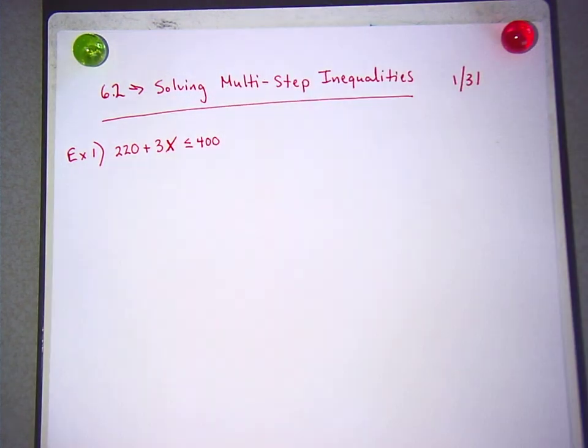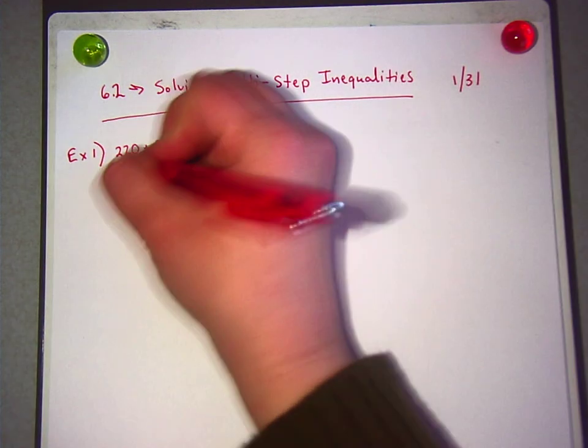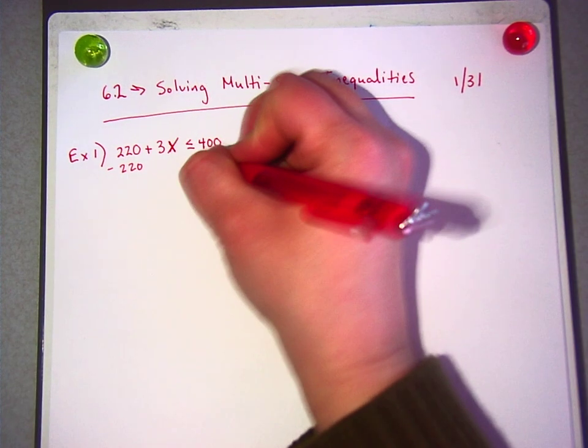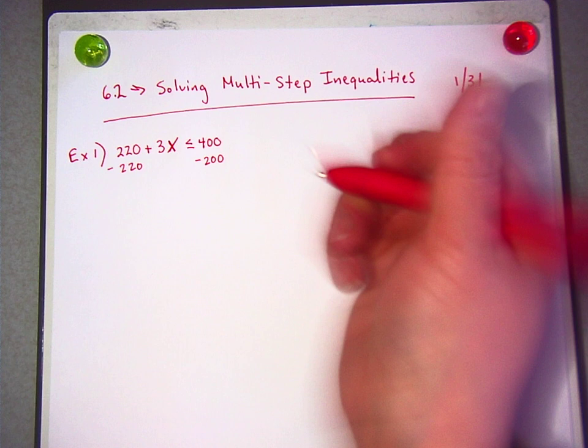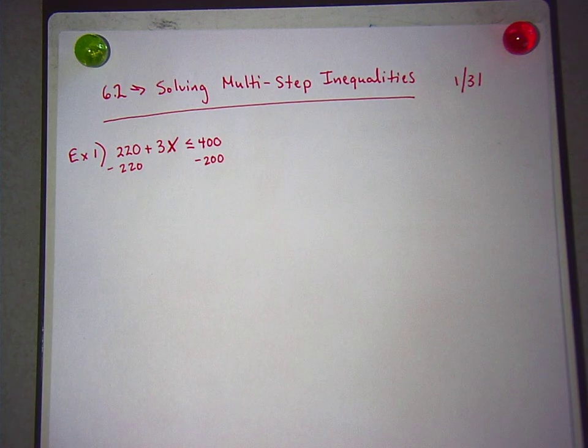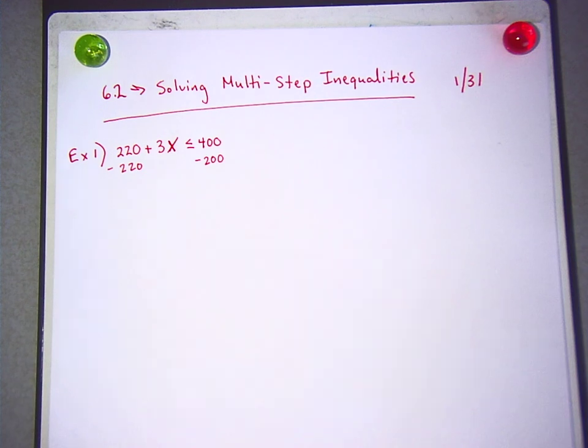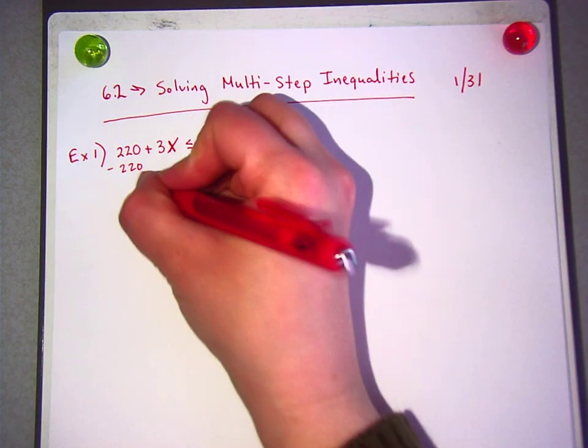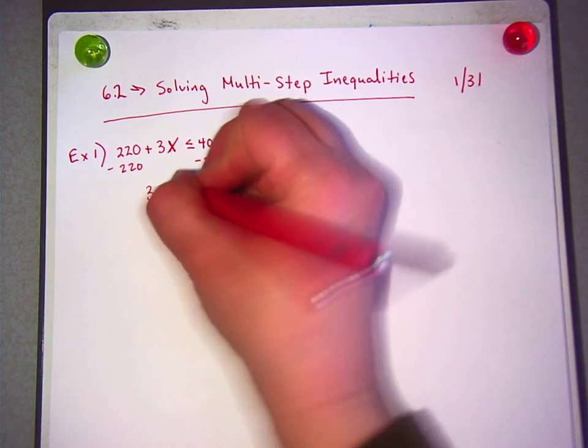Minus 220 from both sides. Just like solving an equation, it's both sides of the inequality. Do I need to switch my sign? No. When do you switch your sign? When there's a negative. Well, this is a negative. Yeah? When you're the multiplication and division thing. Right. When you multiply or divide by a negative. So, not just any negative. It's multiplying or dividing by a negative.